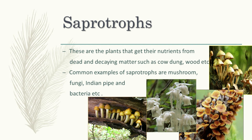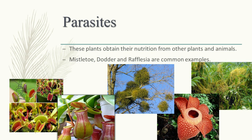Firstly, saprophytic plants, or saprotrophs — these are organisms that get their nutrients from dead and decaying matter. Mushroom, Indian pipe, and some bacteria come under this category. Secondly, parasites — these plants obtain their nutrition from other plants and animals. Some grow on other plants, like mistletoe and dodder. Some depend on animals or insects, like the pitcher plant and Venus flytrap.